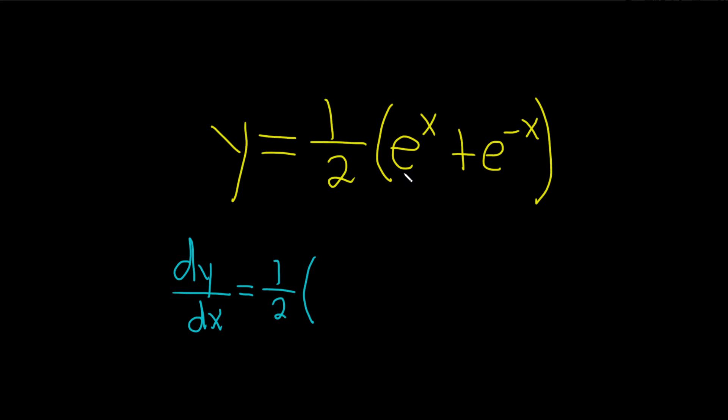And then we just have to differentiate each of these pieces. So the derivative of e to the x is just e to the x.